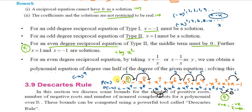Using Descartes' sign rule, we can determine the number of positive, negative, and imaginary roots of a polynomial equation. Thank you students for watching this video.